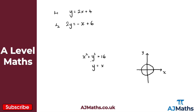So my circle here would be centred at the origin with a radius of 4. If I draw the straight line y equals x going through the origin, what you can see is that we actually have two points of intersection — this point here and this point here. So we'd get two solutions: an x equals and y equals, and then another x equals and y equals.